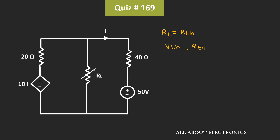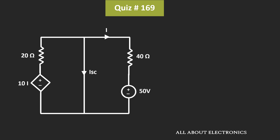First of all, we will find the Thevenin's equivalent voltage across the load resistor. Now, if you look at this circuit, this circuit contains dependent as well as independent sources. So in this case, to find the Thevenin's equivalent resistance, we will find the short circuit current. From this, we can say that Rth is equal to Vth divided by the short circuit current. So first of all, let's find the Thevenin's equivalent voltage.